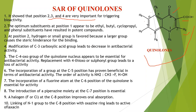The first point: positions 2, 3, and 4 are very important for bioactivity. The second point: the optimum substituents at position 1 appear to be ethyl, butyl, cyclopropyl, and phenyl substituents — we know that N at position 1 is R1. If these groups are present, the resultant compound is potent.